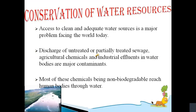Access to clean and adequate water sources is a major problem facing the world today. Steps have to be taken to conserve this dwindling resource. Even though water is a renewable resource, its overuse and pollution make it unfit for use. Discharge of untreated or partially treated sewage, agricultural chemicals, and industrial effluents in water bodies are major contaminants — they pollute water with nitrates, metals, and pesticides. Effluent means liquid waste or sewage discharged into a river or the sea.